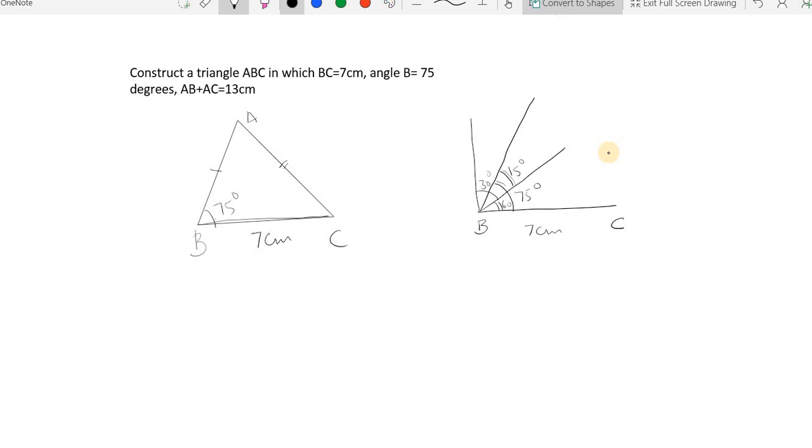So here you can see this is the 75 degree angle. Now this particular line is extended such that I get 13 centimeters. You can take the compass and cut an arc of 13 centimeters over here. Once this is done, then connect these two, that is from this point connected to C.